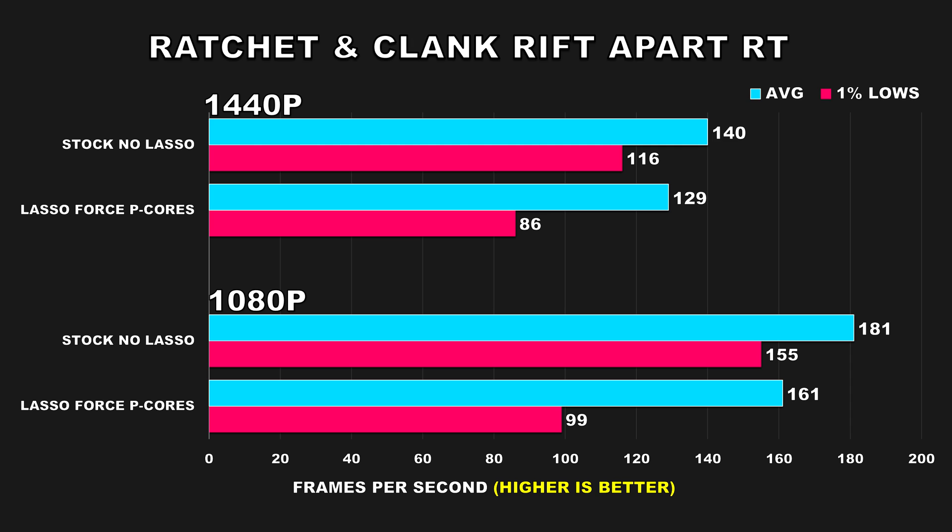Our next game, Ratchet & Clank: Rift Apart, presents a significant performance regression. At 1080p, performance is considerably better without Process Lasso running — a 12% increase in average FPS and a substantial 57% increase in the 1% lows. At 1440p, we become more GPU-bound so the margins narrow, but the performance difference remains significant: 9% better average FPS and a 35% increase in 1% lows. Given the severe performance regression, I would advise against using Process Lasso for this title.